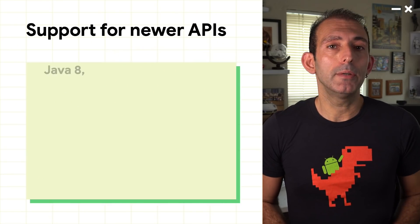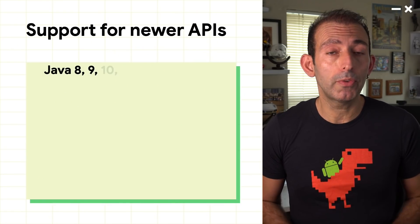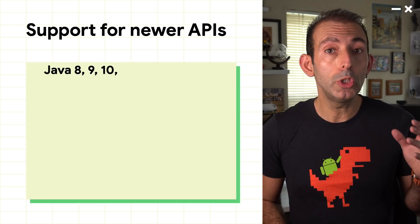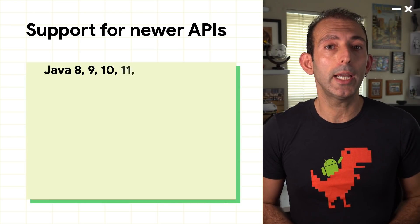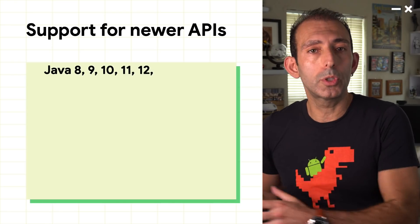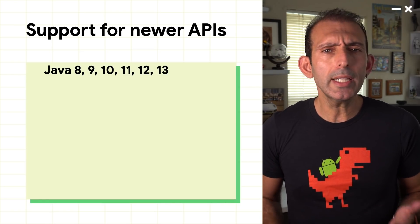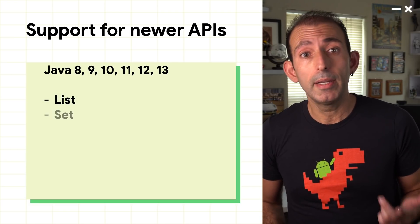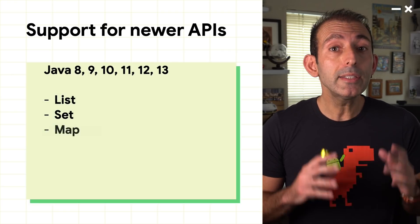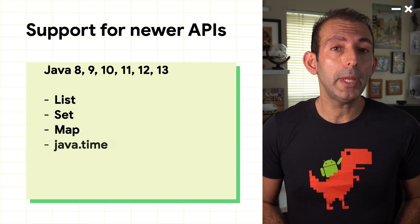With each new release of Android, additional Java APIs are added from OpenJDK to Android. In Android 11, we added support for a number of APIs from newer OpenJDK releases all the way up to version 13, including additions to List, Set, Map, and the new Java Time API.